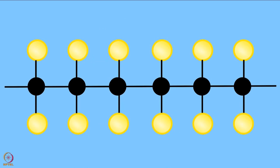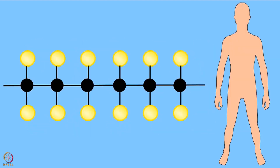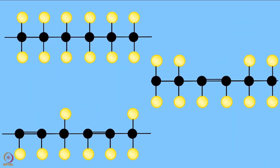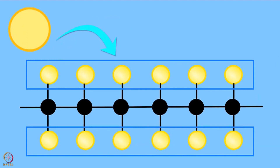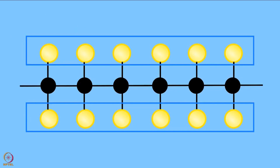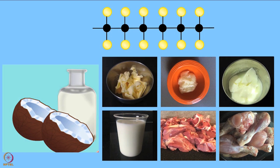The basic building blocks of fat are fatty acids. Fats are made up of carbon and hydrogen joined together in long chains, called hydrocarbons. The structure of the fat will affect how it behaves in our bodies. The level of saturation affects the structure of a fat. Saturation refers to the amount of hydrogen bonded to a hydrocarbon chain. The more hydrogens bonded, the more saturated the fat is. Saturated fats are found in coconut, milk, milk products, meat, etc.